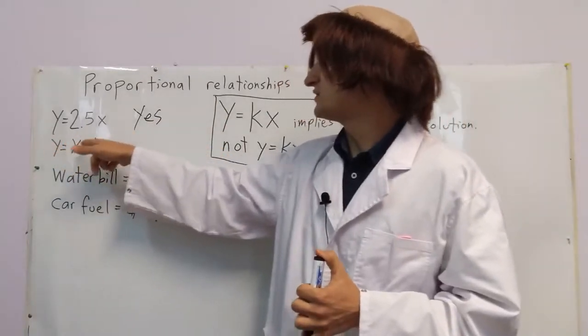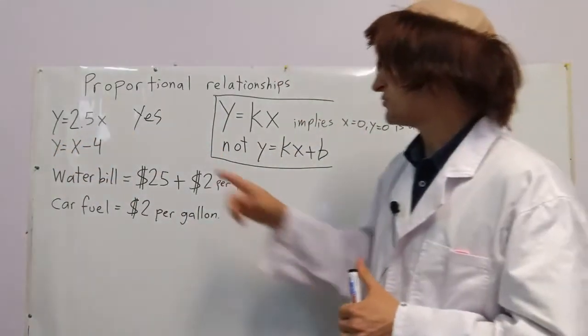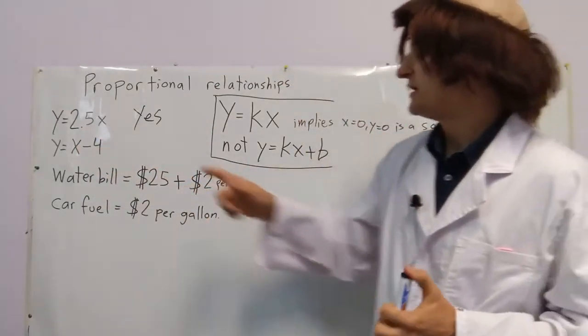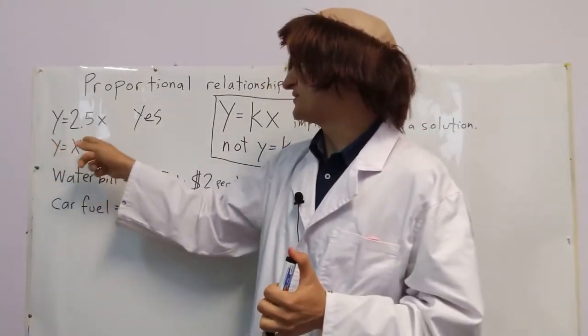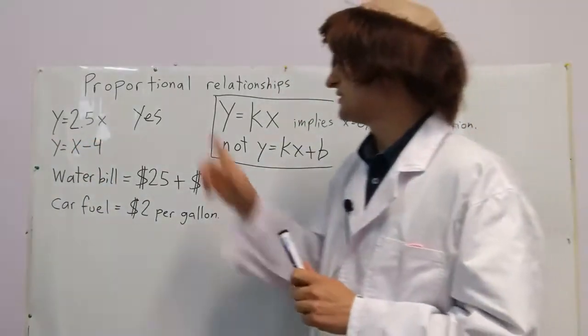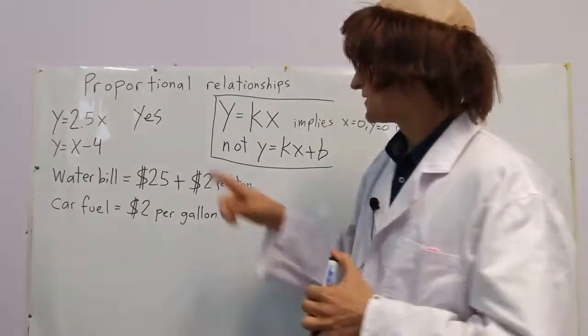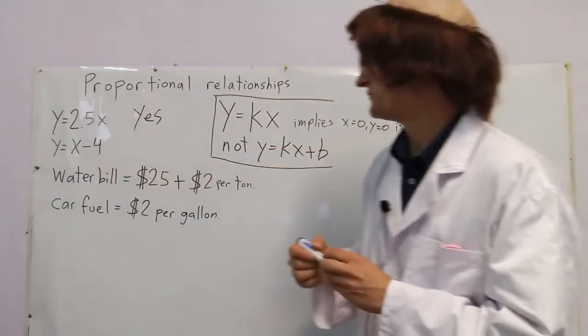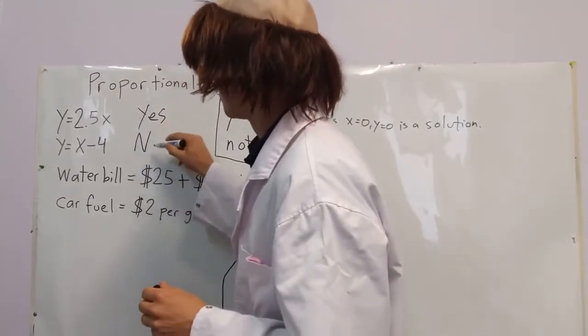y equals x minus 4. Is that proportional? Well, we can plug in 0, 0, and we get 0 equals 0 minus 4. 0 equals negative 4. That is false. Also, you'll see that this matches this format right here. So, we'll write no.